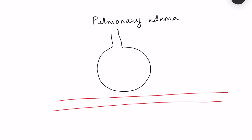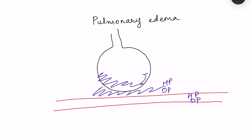Pulmonary edema is accumulation of fluid in the interstitial tissue and then in the alveoli in the lungs. This accumulation depends on the balance of the Starling's forces, which operate everywhere in the body. These Starling's forces are the hydrostatic pressure and the oncotic pressure within the vessels, the hydrostatic pressure and oncotic pressure in the interstitial tissue, and also the amount of fluid movement depends on the capillary wall permeability.